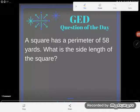It's GED question of the day. Today we've been told that we've got a square that has a perimeter of 58 yards and we've been asked what is the side length of the square.